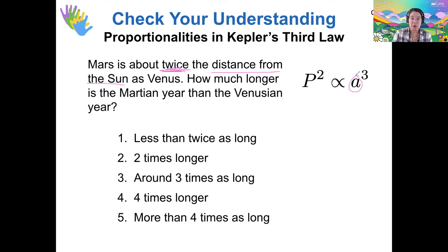Using what you now know about proportionality, how much longer is the Martian year than the Venusian year? So let me restart my poll, and now consider what has to happen to the variables in order to find the period by itself.